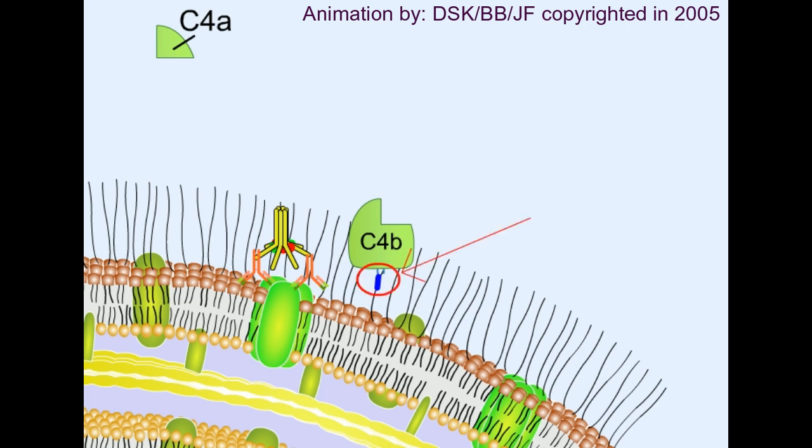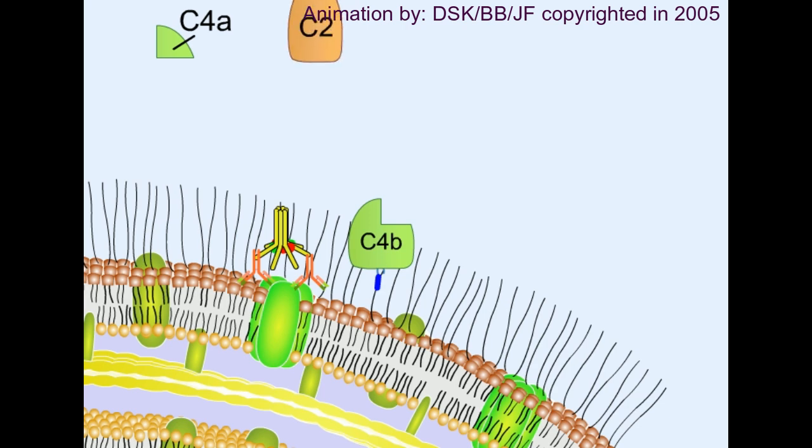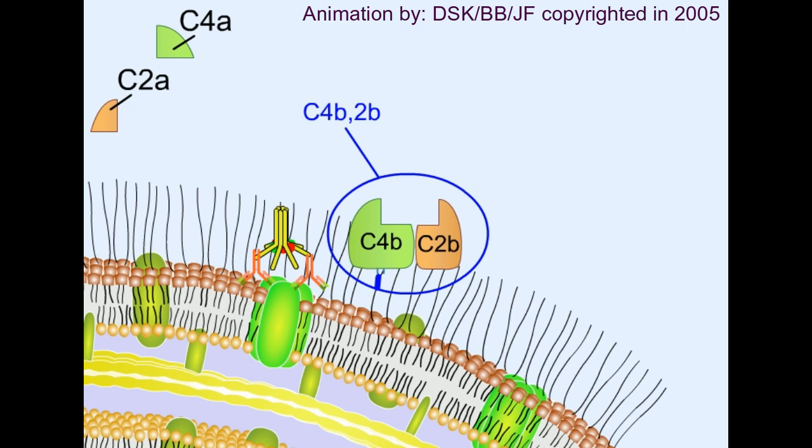And in this case, C4b is anchored. Then C2 comes in, it's cleaved again into C2a and C2b. C2a is diffused and C2b is taken and it will be adhered to the C4b. Now we have C4b and C2b complex together. This C4b and C2b complex together have a tendency to cleave C3 complement, that's why it's known as C4b-C2b complex or C3 convertase, because both of them have an enzymatic activity to cleave C3. It's known as the C3 convertase of the classical pathway.